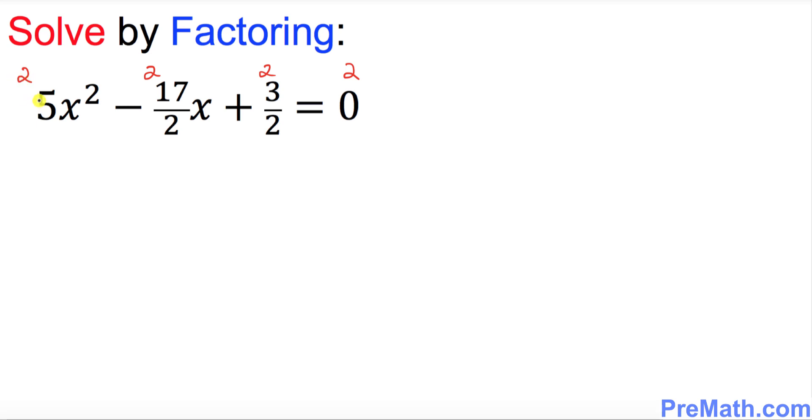So this becomes 2 times 5 is 10x squared, and this 2 and 2 cancel out, we get minus 17x. Likewise this 2 and 2 cancel out, plus 3 equals 0. So we no longer have a fraction. Now we're going to go ahead and take care of it.